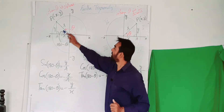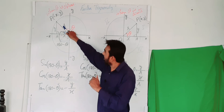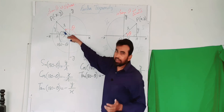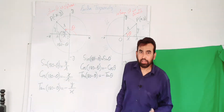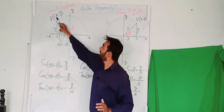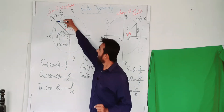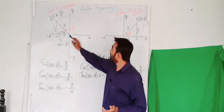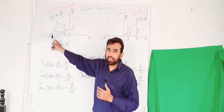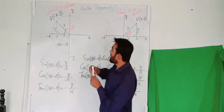Let me explain again how this angle is 180 minus theta. The total angle is 180. Theta has moved from the x-axis in the anticlockwise direction, so from 180 we subtract theta, and the remaining angle is 180 minus theta. Now consider this right angle triangle: the point P has coordinates minus x and positive y, because along the x-axis the value is negative, while the y-axis upward direction is positive.